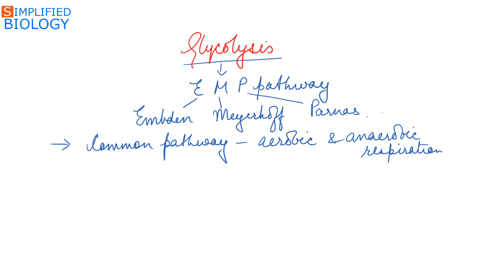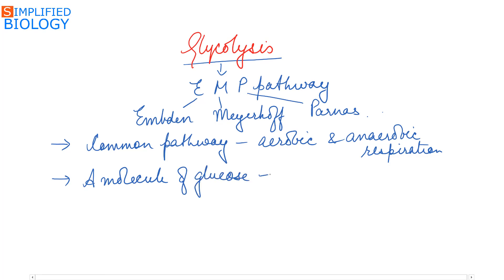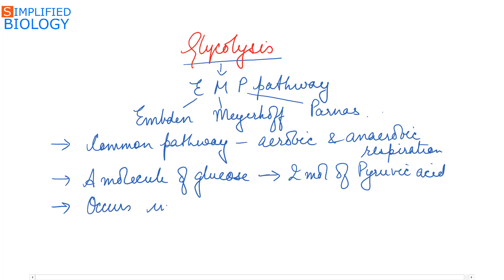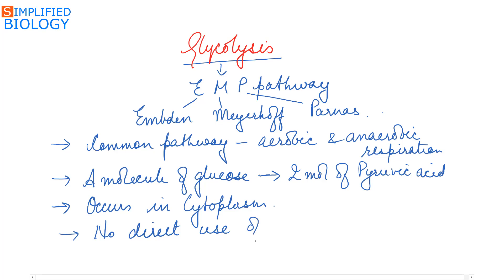During glycolysis, a molecule of glucose gets converted into two molecules of pyruvic acid. This process occurs in the cytoplasm, with no direct use of oxygen, and is also known as oxidative anabolism.